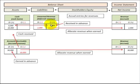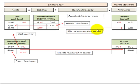Unearned revenue is where we receive payment in advance of doing some work. At the time we receive the payment, we credit or increase our unearned revenue account and debit or increase our cash account. When we actually do the work or provide the service, we debit or decrease our unearned revenue and credit or increase our revenue account — that's where we allocate this revenue on an accrual basis.